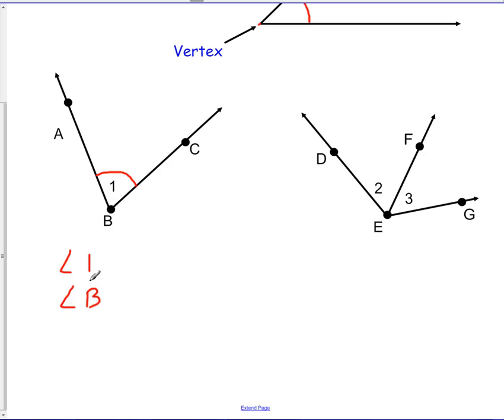And then there's two more ways. We could start with the one ray, go to the vertex, and then go to the other ray. So A, B, C. So we'd write angle, symbol, A, B, C. Or you can go the other way. So from C, B, A, you start at the one ray and then go to the other ray. So angle C, B, A.